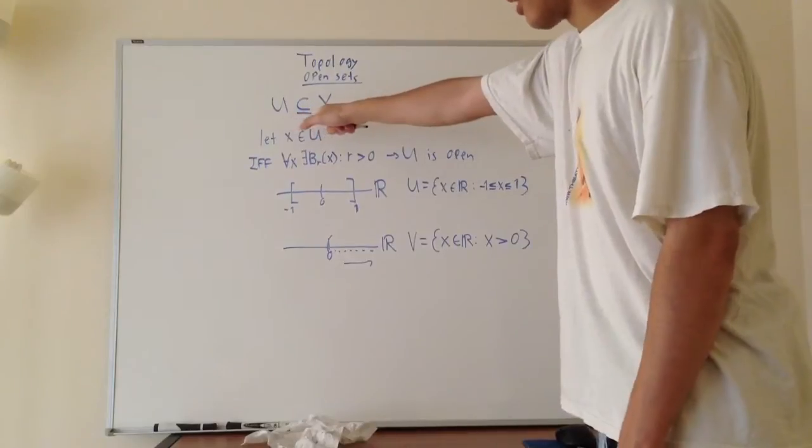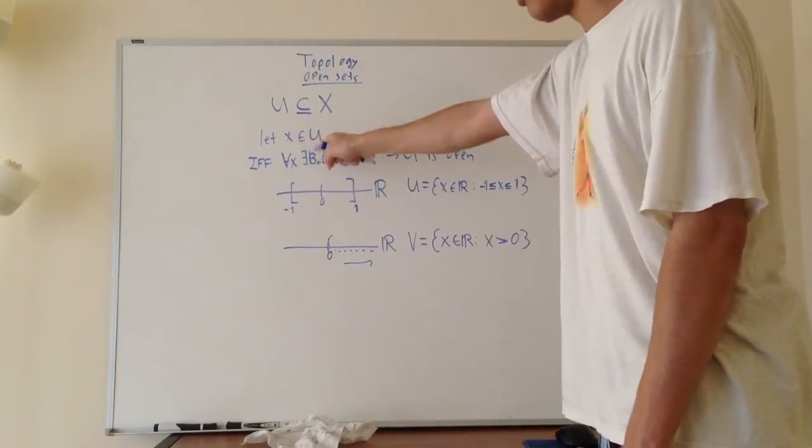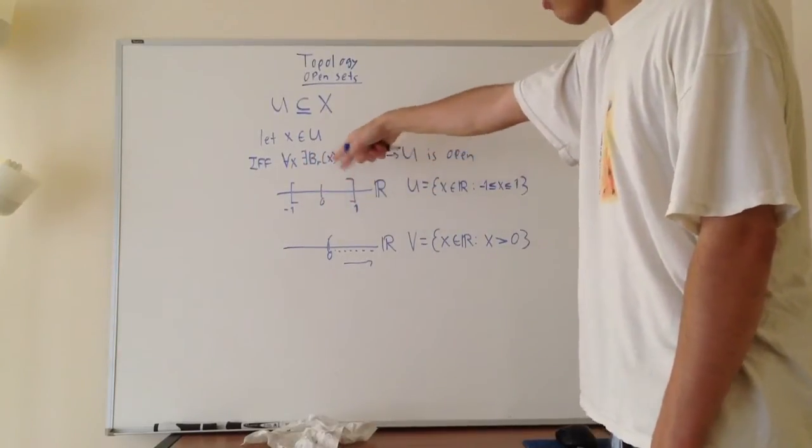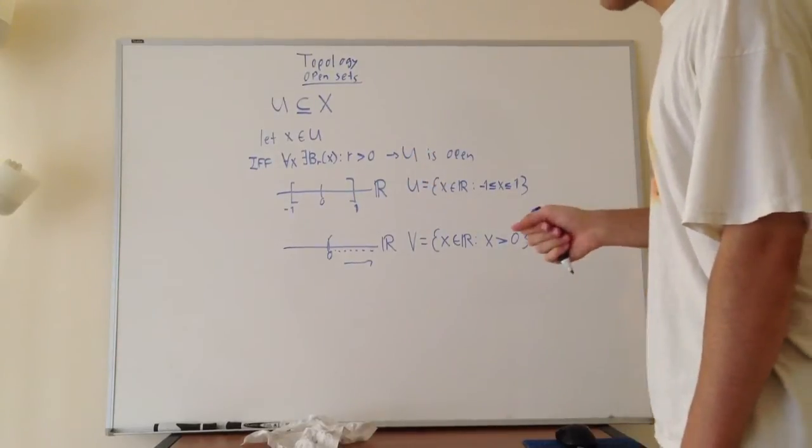Let's let u be a subset of x, some larger set, and then let little x be an element of u. So if for every x there exists an open ball of radius r around that point, obviously greater than zero, then u is open. That is the definition of an open set.